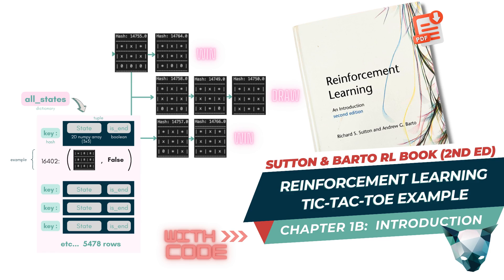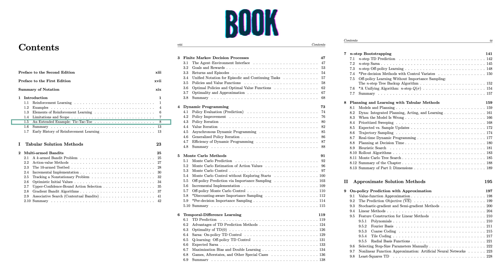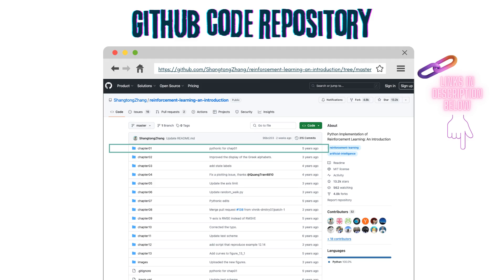Welcome to the second video of our lecture series on reinforcement learning based on Richard Sutton's textbook. This video will dive into using tic-tac-toe as an example of the concepts introduced so far, completing the rest of chapter one. If you have not watched the first video, please do that first. The code we will be going through is available on a repository by Shang Tong Zhang — links in the description below.